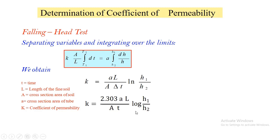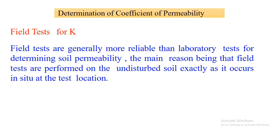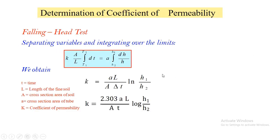These two equations — the constant head formula k = Q·L/(A·h·t) and the falling head formula k = 2.303·(aL/At)·log(h1/h2) — are the most important equations for determining the coefficient of permeability for coarse-grained and fine-grained soils respectively. In the next class we will see the determination of coefficient of permeability using field tests, including confined and unconfined aquifer conditions. Thank you.